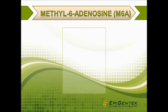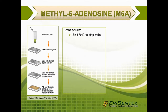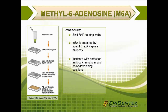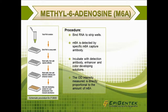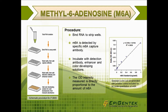In this assay, we start with RNA and bind it to the strip-wells using an RNA high-binding solution. Then M6A is detected by a specific M6A capture antibody. Subsequent incubations with a detection antibody, signal enhancer, and color-developing solutions allow for measuring the OD intensity, which is proportional to the M6A level. A standard curve can be generated with a positive control included for accurate quantitation of M6A.